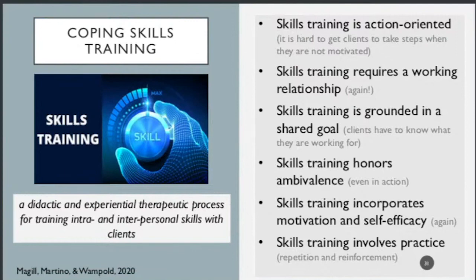Skills training honors ambivalence — even in the action phases, ambivalence will certainly come up. It incorporates motivation and self-efficacy — attention to key mechanisms of behavior change — and it does have a practice component. It's not enough to say 'have you considered this?' — there needs to be some form of application that ideally occurs, helping with the learning process.